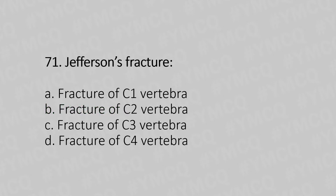Question 71: Jefferson's fracture — option A: fracture of the C1 vertebra, option B: fracture of the C2 vertebra, option C: fracture of the C3 vertebra, option D: fracture of the C4 vertebra. The answer is option A: fracture of the C1 vertebra.